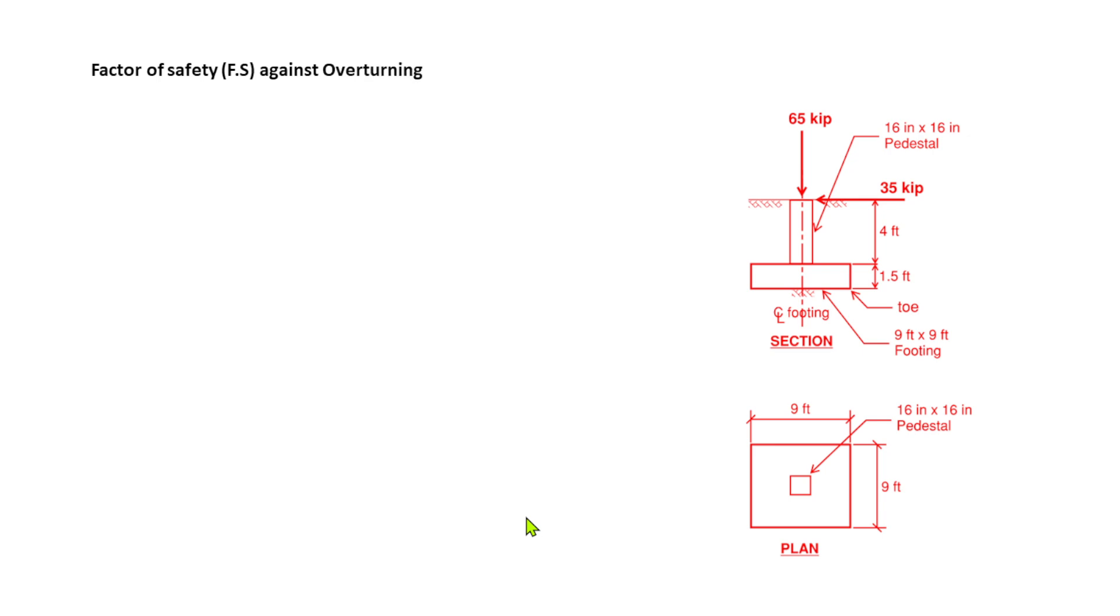So now we will proceed to find the safety factor against overturning. For overturning, we have RM over OM. So RM, 536.4 kip-feet over 192.5 kip-feet. We have determined this earlier. It's equal to 2.79. So that is our factor of safety against overturning, which is greater than 1.5. Normally 1.5 or 2 is good enough. So we are okay for overturning.